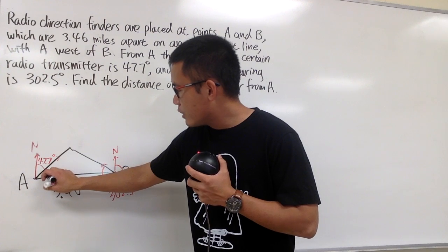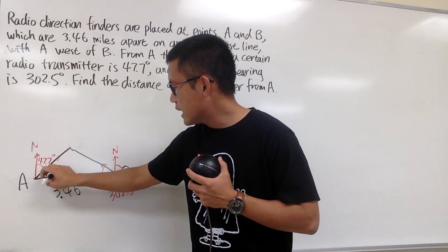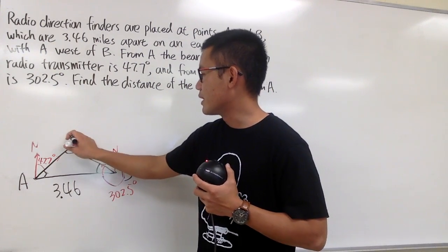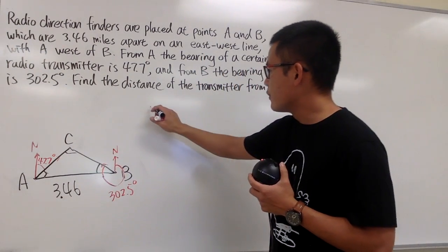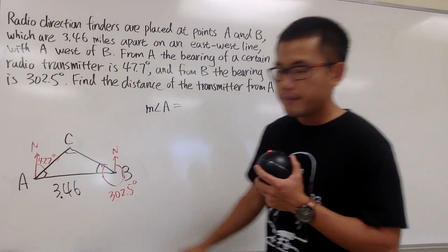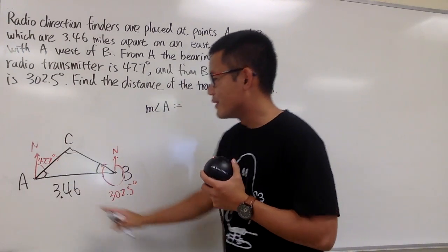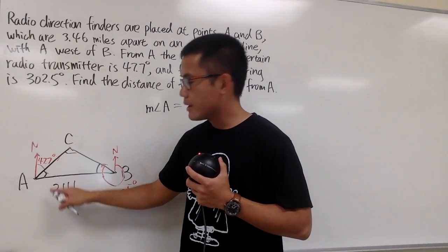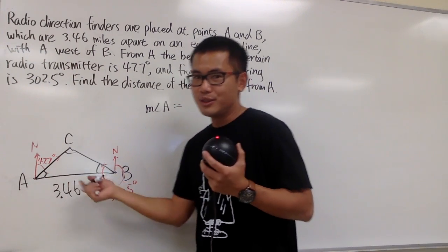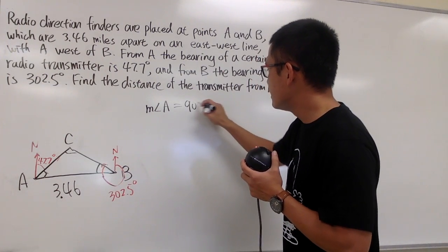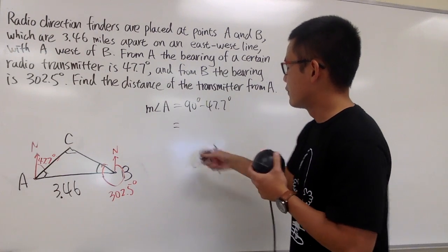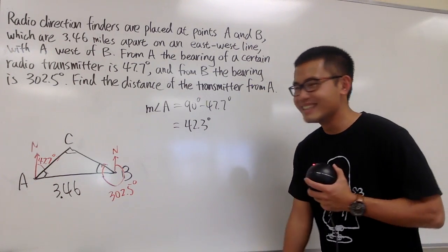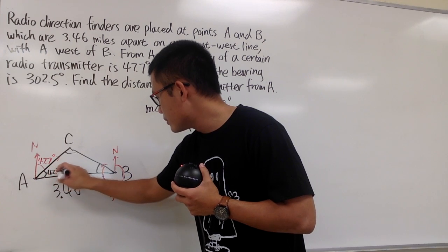We need to find the angles inside the triangle. I'll call the interior angle at A as angle A, and at B as angle B, and the transmitter vertex as C. For angle A: north is straight up and the line AB is horizontal, so vertical and horizontal make 90 degrees. The bearing from A was 47.7 degrees, so angle A inside the triangle is 90 minus 47.7, which gives 42.3 degrees.